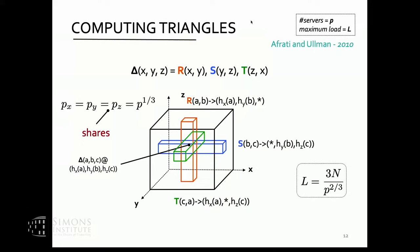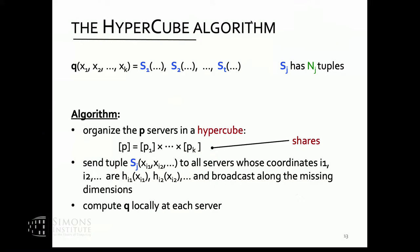This idea generalizes: take your P machines, organize them in a hypercube whose dimensions equal the number of variables in your query. Relations can have different sizes. For a tuple from relation R_j, hash on the variables present in R_j and replicate (broadcast) along the missing dimensions. After sending — one round — do local computation. By the same correctness argument, if there is an output tuple, all the necessary data to generate it will be in some node.